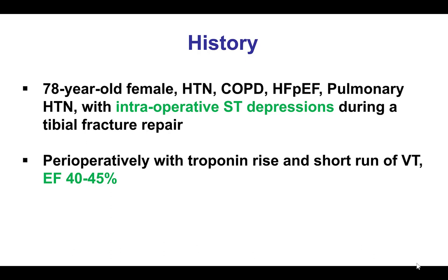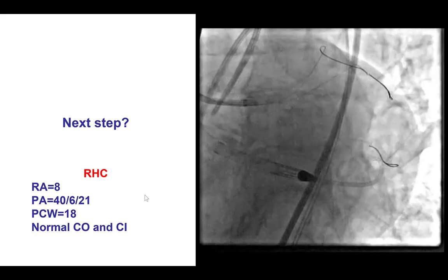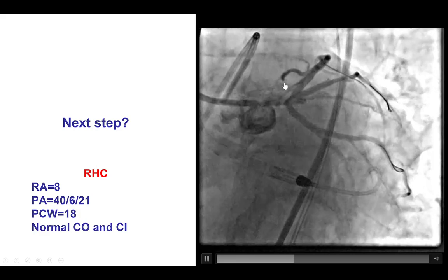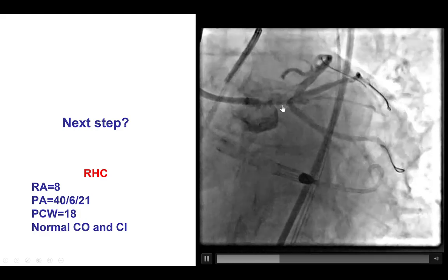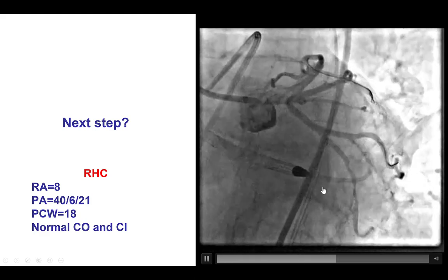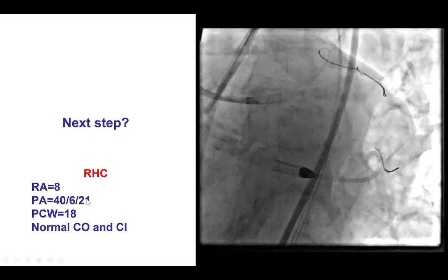The patient was an elderly woman with multiple comorbidities that developed a perioperative myocardial infarction, as well as ventricular tachycardia, and was found to have an ejection fraction of 40-45%. She was referred for coronary angiography that demonstrated a heavily calcified and severely diseased left main all the way from the ostium to the distal trifurcation, along with some disease in the distal circumflex. Right heart characterization showed normal hemodynamics.